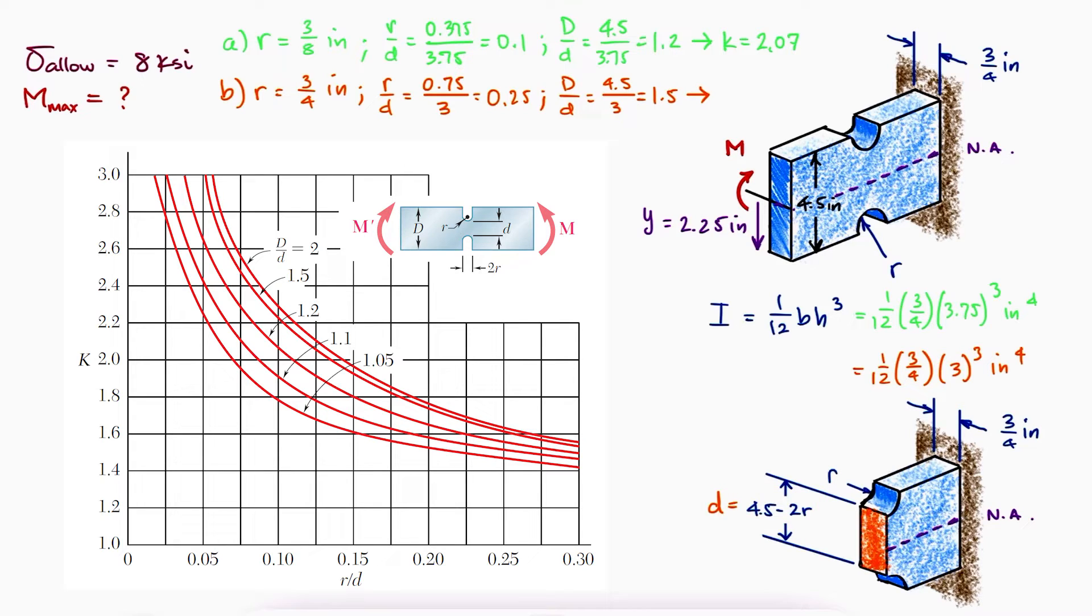And again, by looking at the chart with a 0.25 in the x-axis and a 1.5 D over D curve, we'd see a K value slightly higher than 1.6.